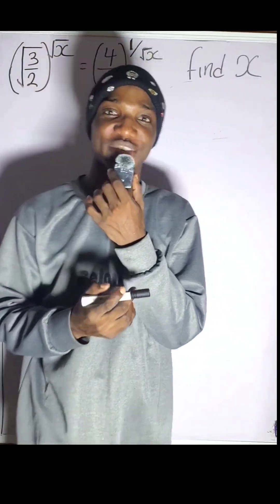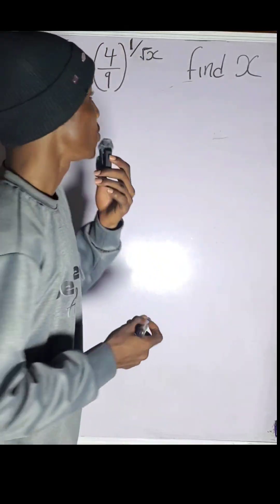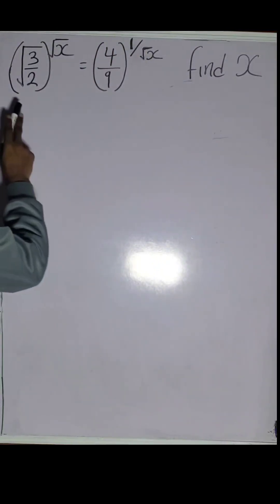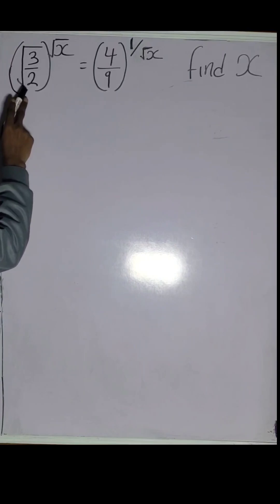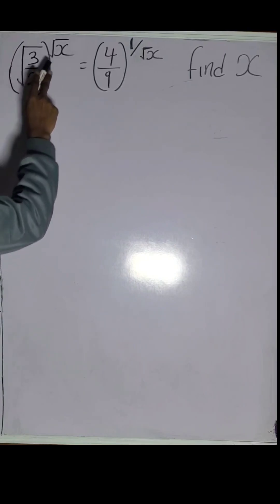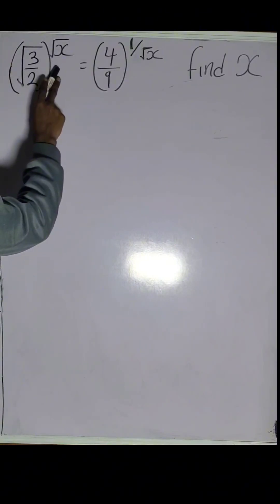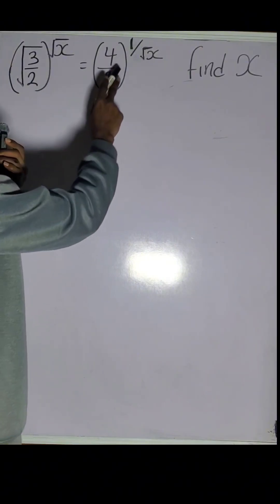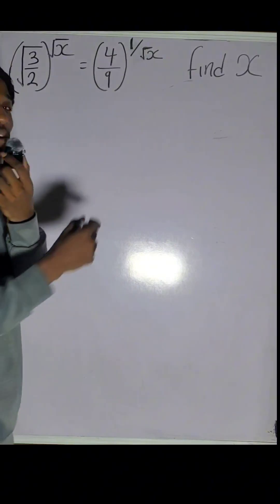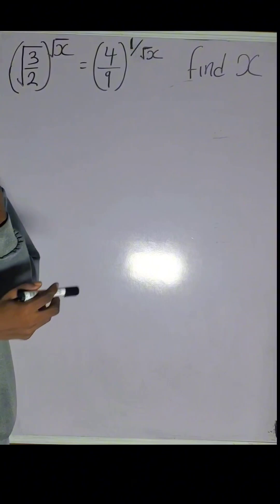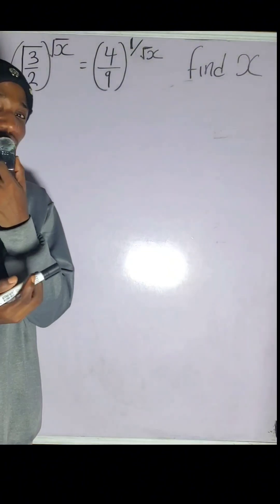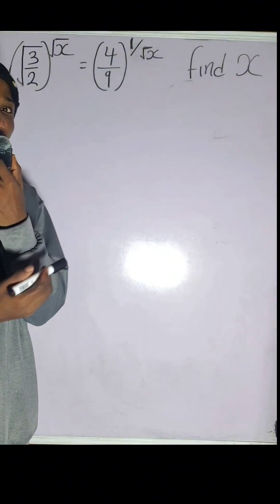Today we have an interesting question on the board. We are asked to find the value of x in: square root of 3 over 2, raised to the power of root x, equals 4 over 9, to the power of 1 over root x. How will you approach this question if you encounter it in the exam?